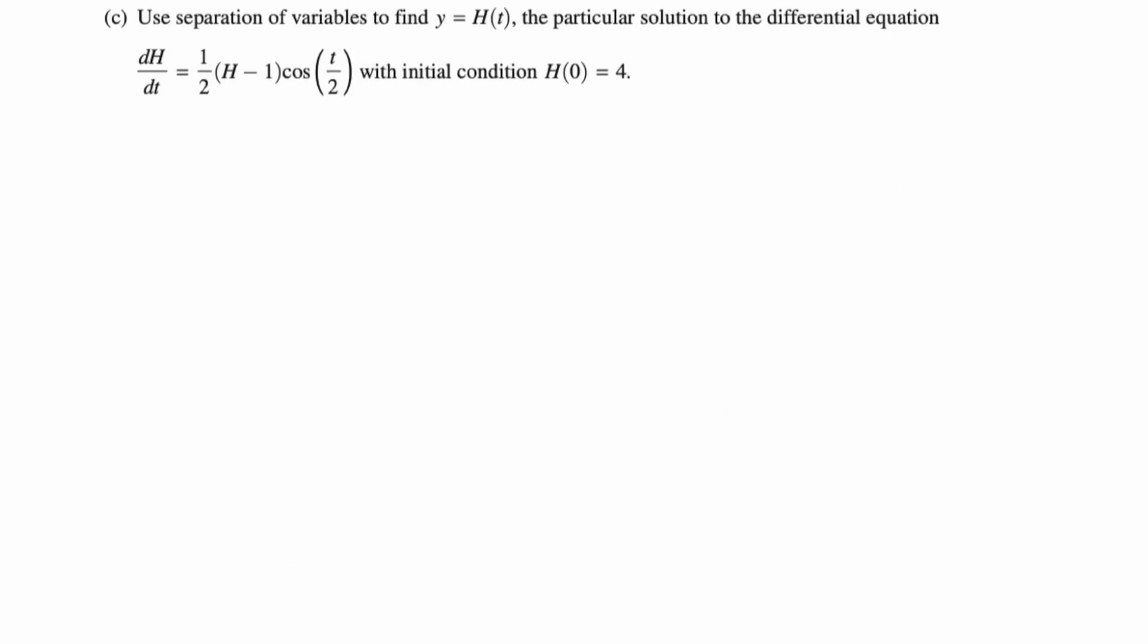Let's take a look at the last part of this question. This one's not surprising. Use separation of variables to find y equals h of t, the particular solution to the differential equation with initial condition h of zero equals four. Step one, we're going to separate. I'm going to leave the one half on the right hand side, and I'm just going to bring the h minus one over. So I'm going to have dh over h minus one is equal to one half cosine of t over two. I think that that was a smart choice. You can still solve it if you bring the one half over. It doesn't really make a difference, but I think it's a little easier to leave it this way.